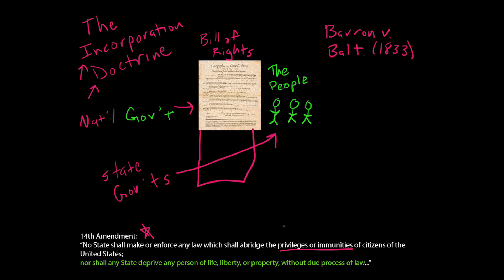The first clause is the Privileges or Immunities Clause, and right after it is the Due Process Clause of the 14th Amendment. There was an early attempt after the 14th Amendment was added to ask the Court whether the Privileges or Immunities Clause means the Bill of Rights protects citizens from state governments. It says: 'No state shall make or enforce any law which shall abridge the privileges or immunities of citizens of the United States.' That sort of sounds like the Bill of Rights protections are our privileges and immunities.